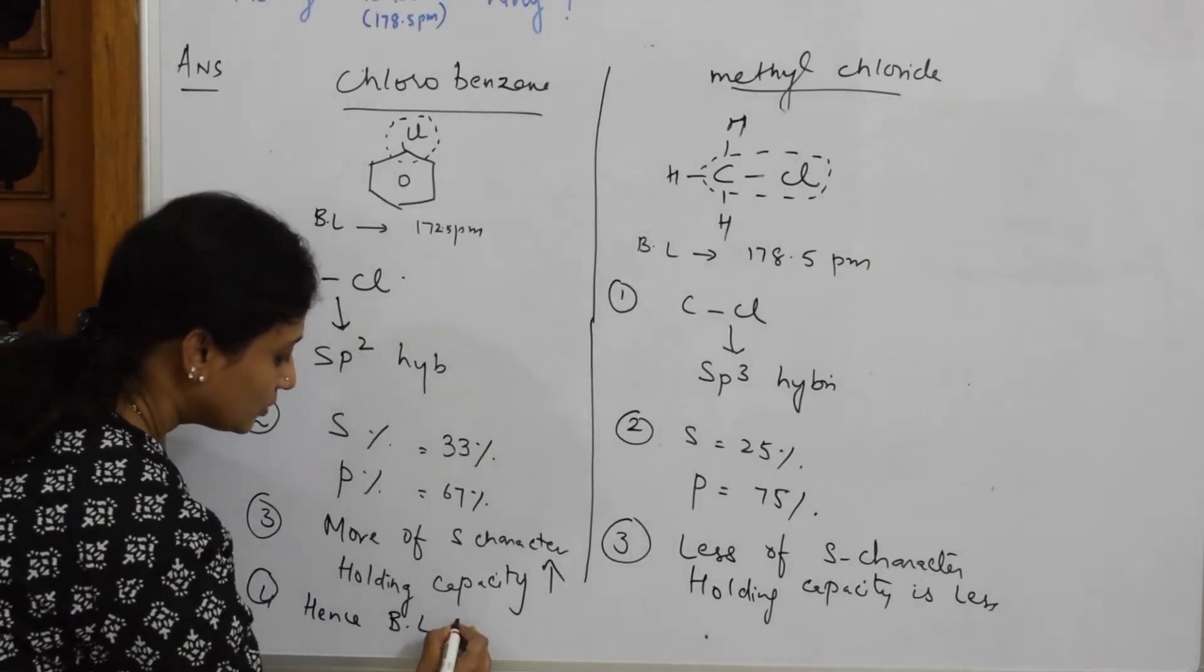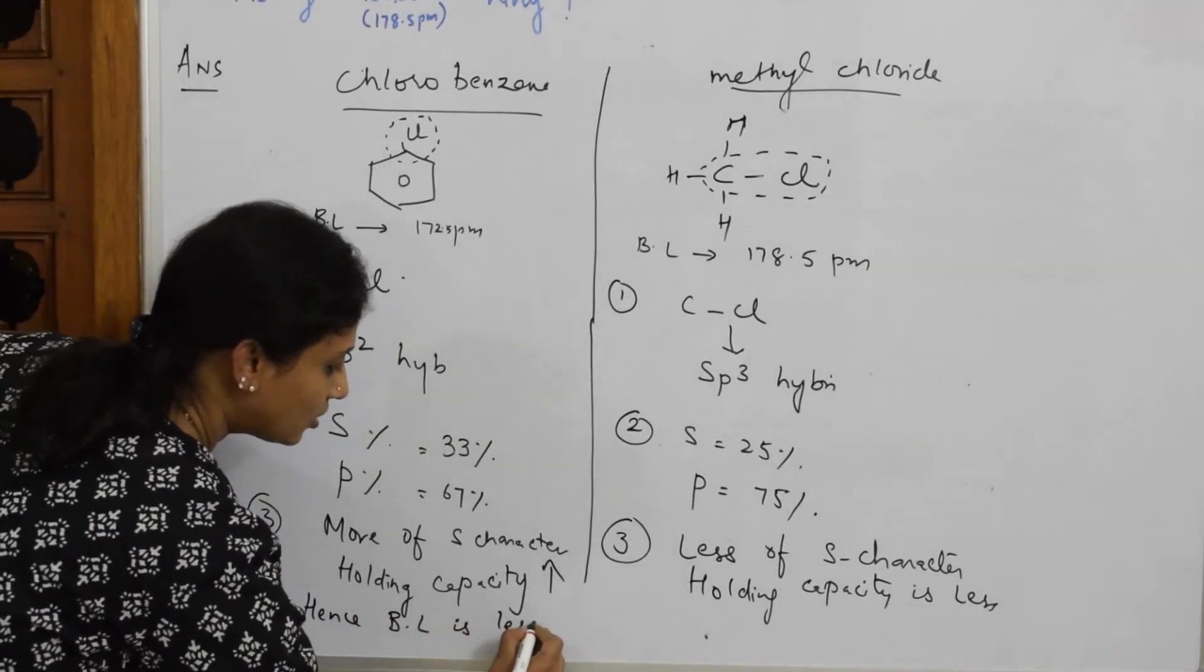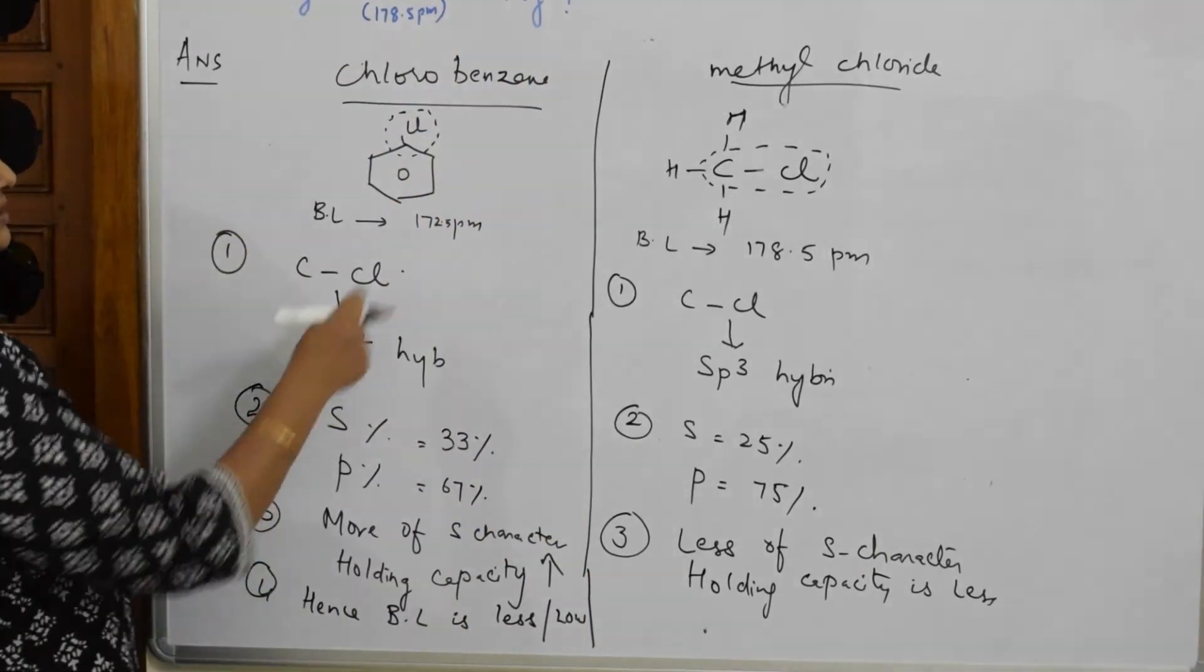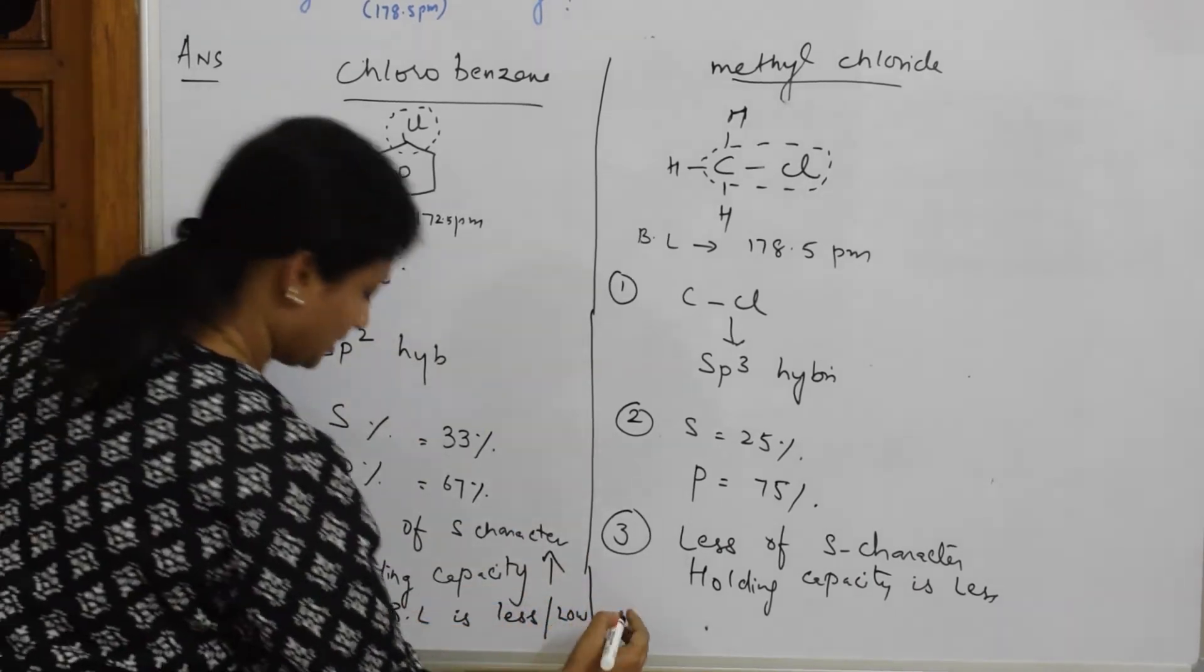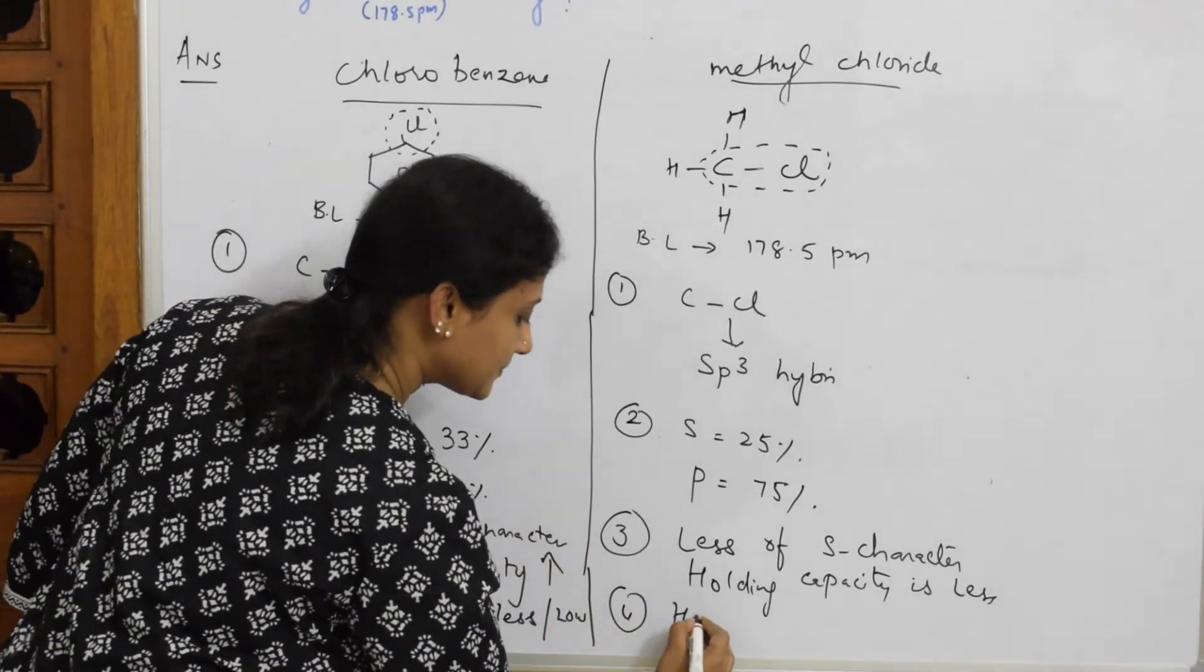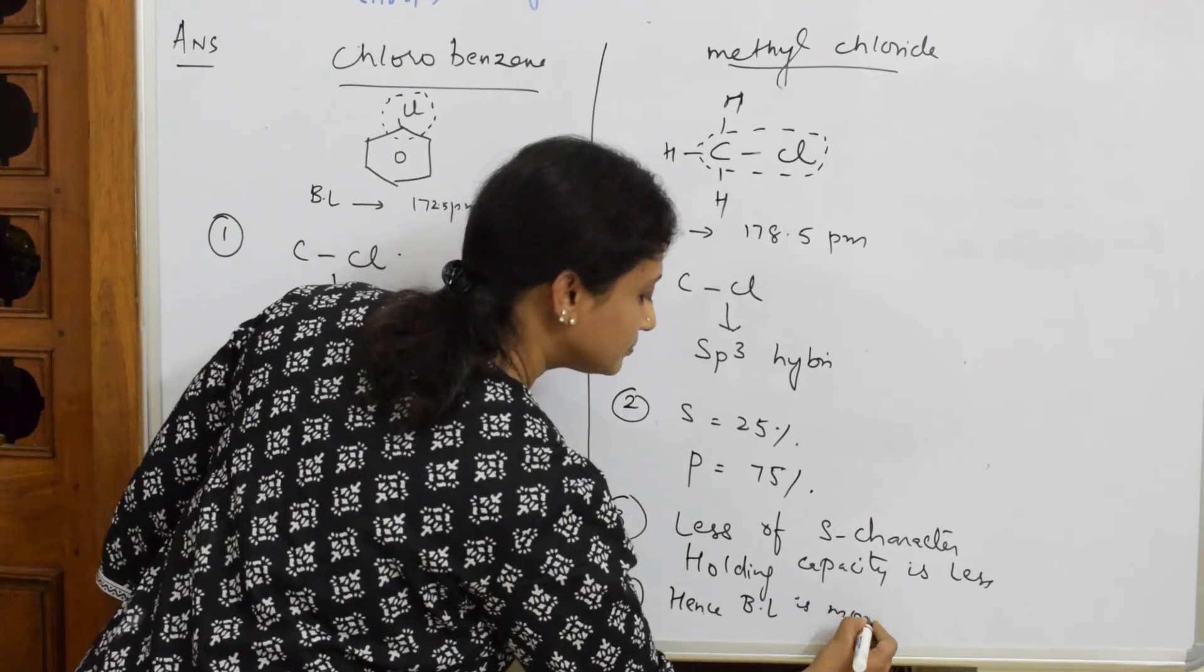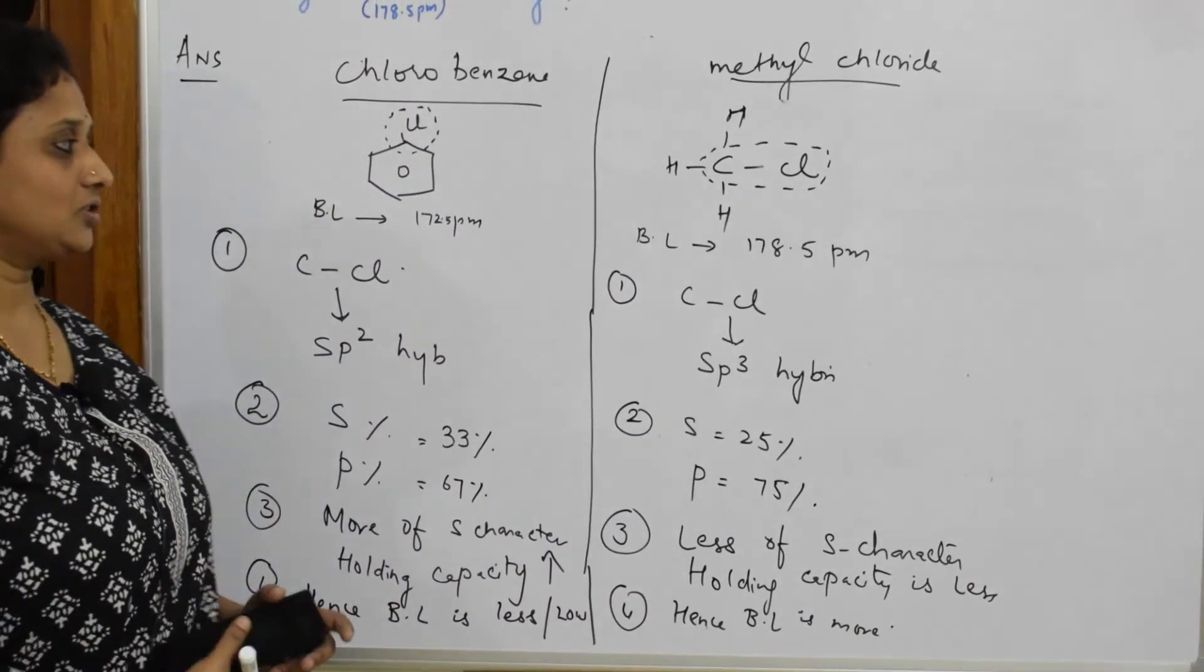Bond length is less, or bond length is low. That is what they've given me. See, here it is 172 picometer. Here what will I write? Hence bond length is more.